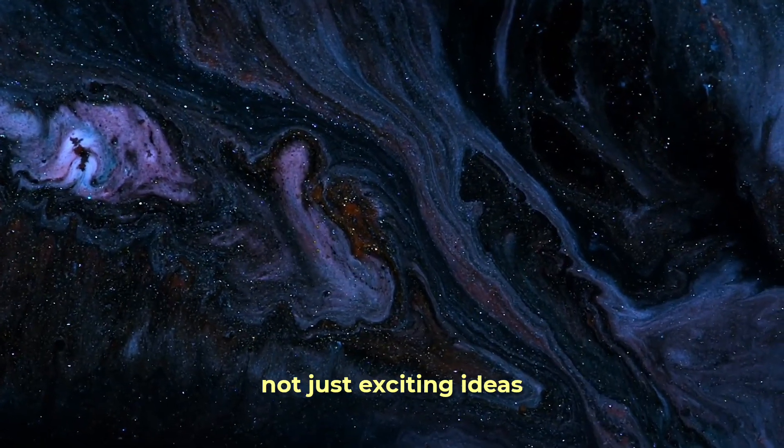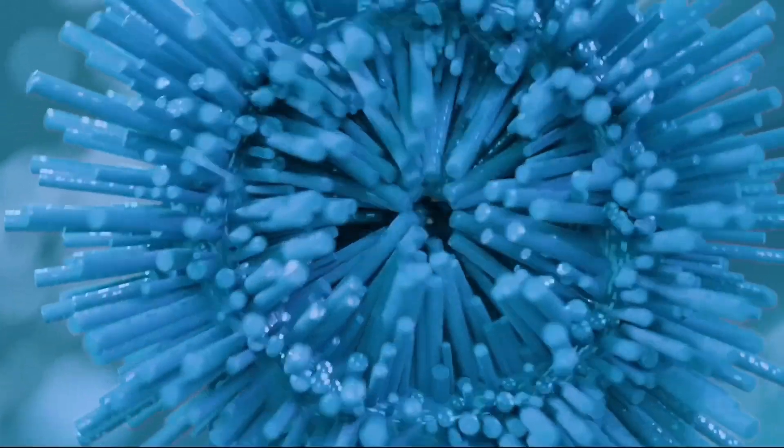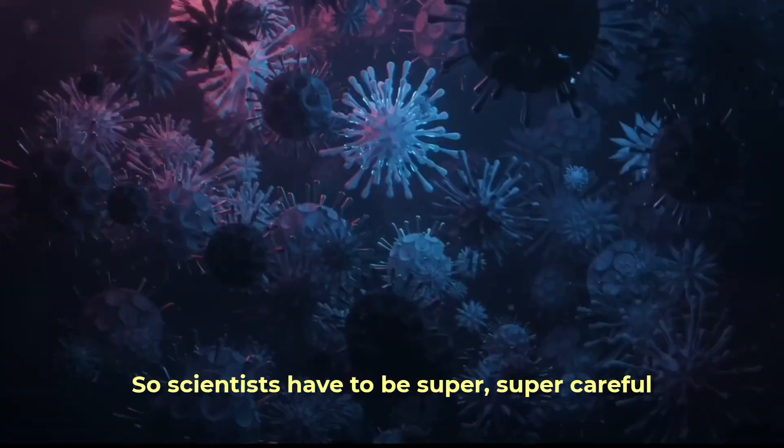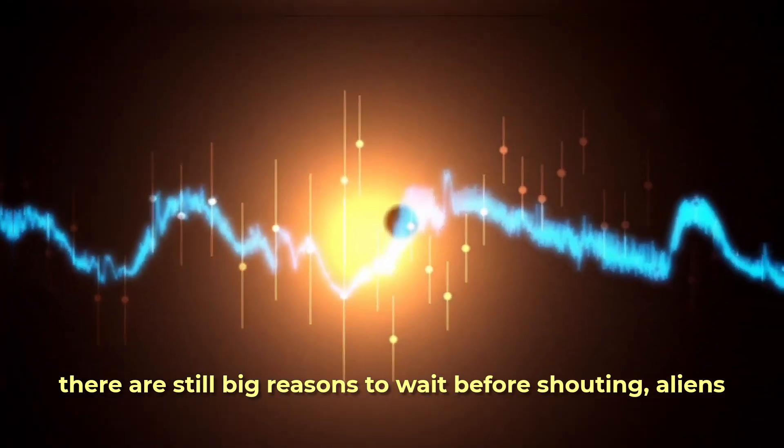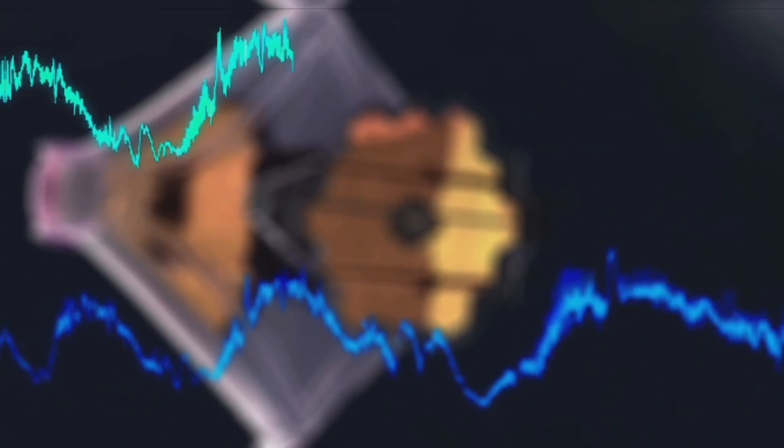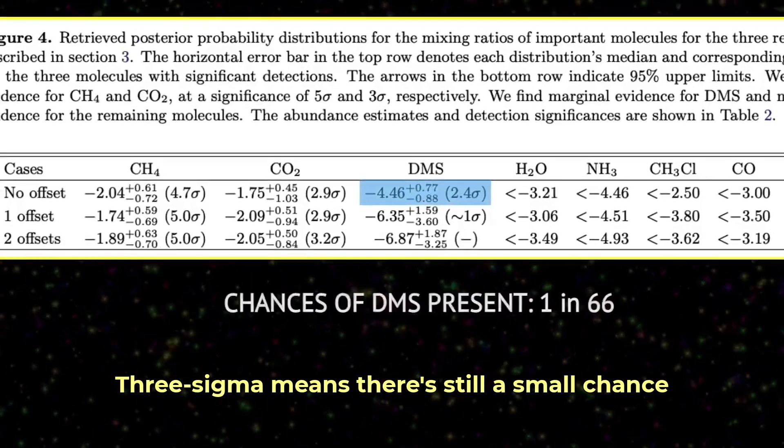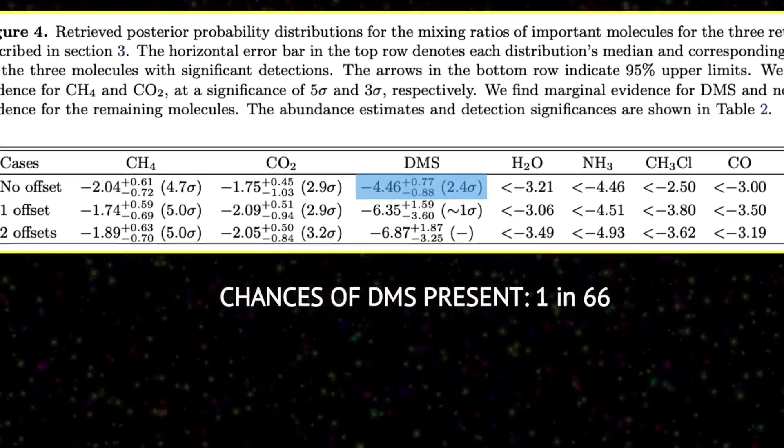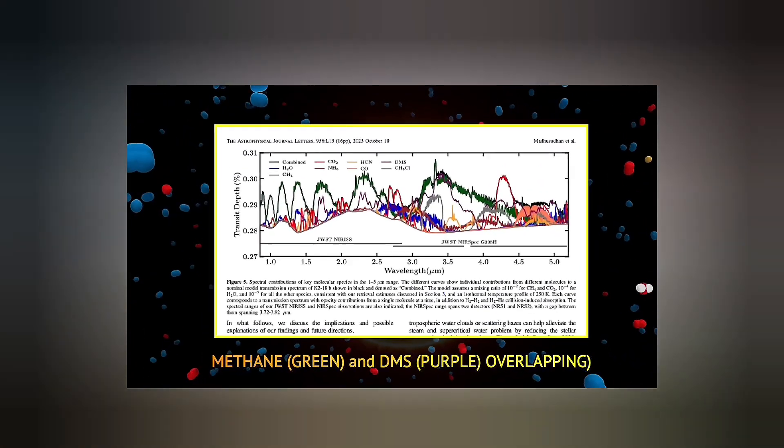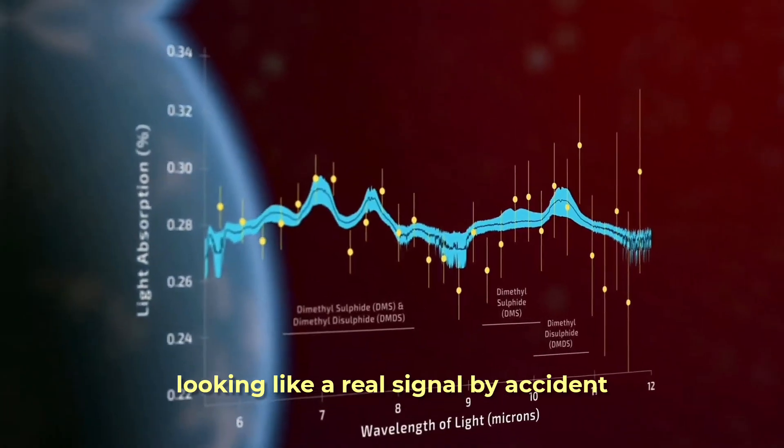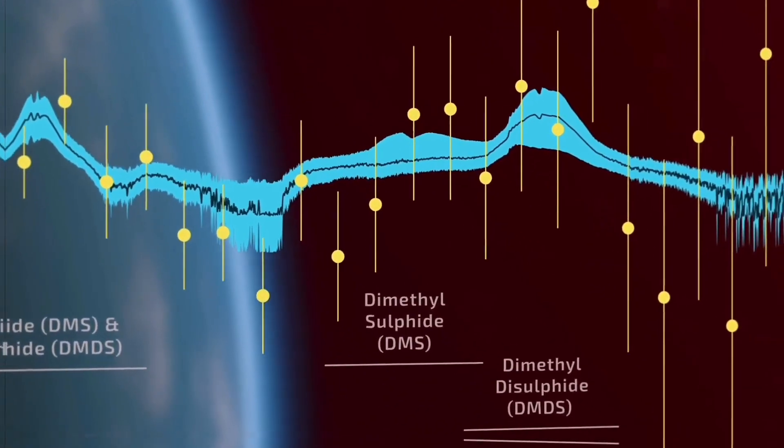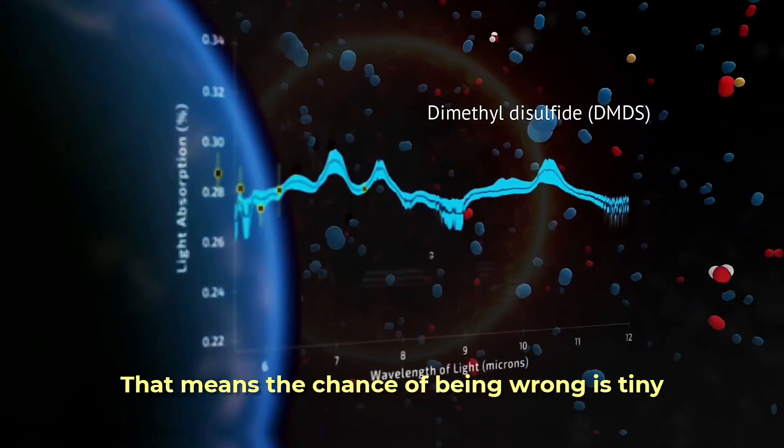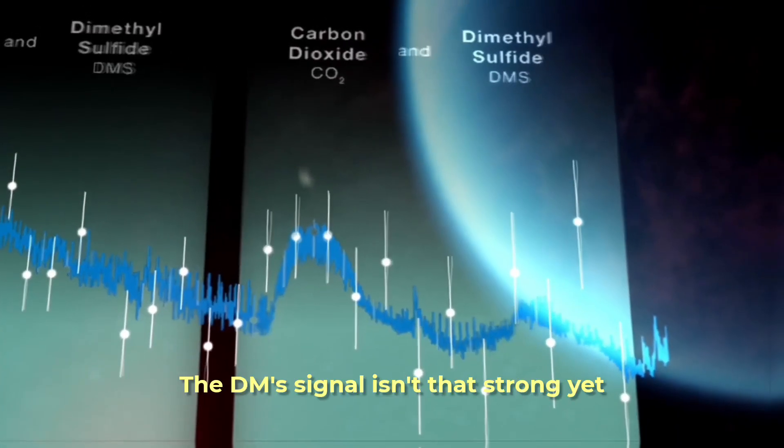But hang on. Science needs proof, not just exciting ideas. Is this really a sign of alien life? Finding aliens would be the biggest news ever, so scientists have to be super careful. Even though the DMS signal looks stronger, there are still big reasons to wait before shouting 'aliens.' First, how sure are they? The signal is still only at the three sigma level. That's a science way of saying how sure they are. Three sigma means there's still a small chance, about one time out of 370, that the signal is just random luck, like static on the telescope looking like a real signal by accident. That sounds small, but for huge news like finding life, scientists want to be much surer. They want five sigma proof. That means the chance of being wrong is tiny, less than one in a million. The DMS signal isn't that strong yet.